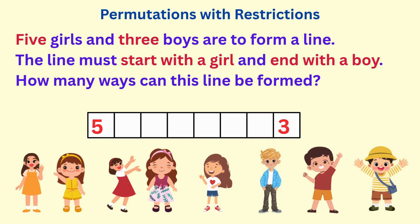After choosing the first and last positions, there are six persons left to arrange in the middle. This can be done in six factorial ways, since there are six choices for the second spot, five choices for the third spot.